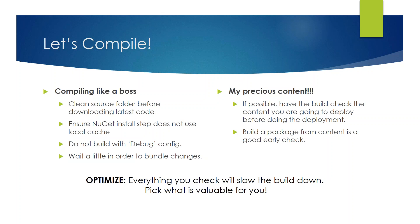Beyond code, there's content. With Sitecore we don't just push code - we have templates, layouts, system settings, configurations, and items in the tree. We need a way to check that during CI. One way is to trigger a package build - if you can build an installation package, that's an early check that your content projects are in good state. If you use TDS, build an update package. If you use SICK or Courier, find a way to confirm you're in a good state to push.